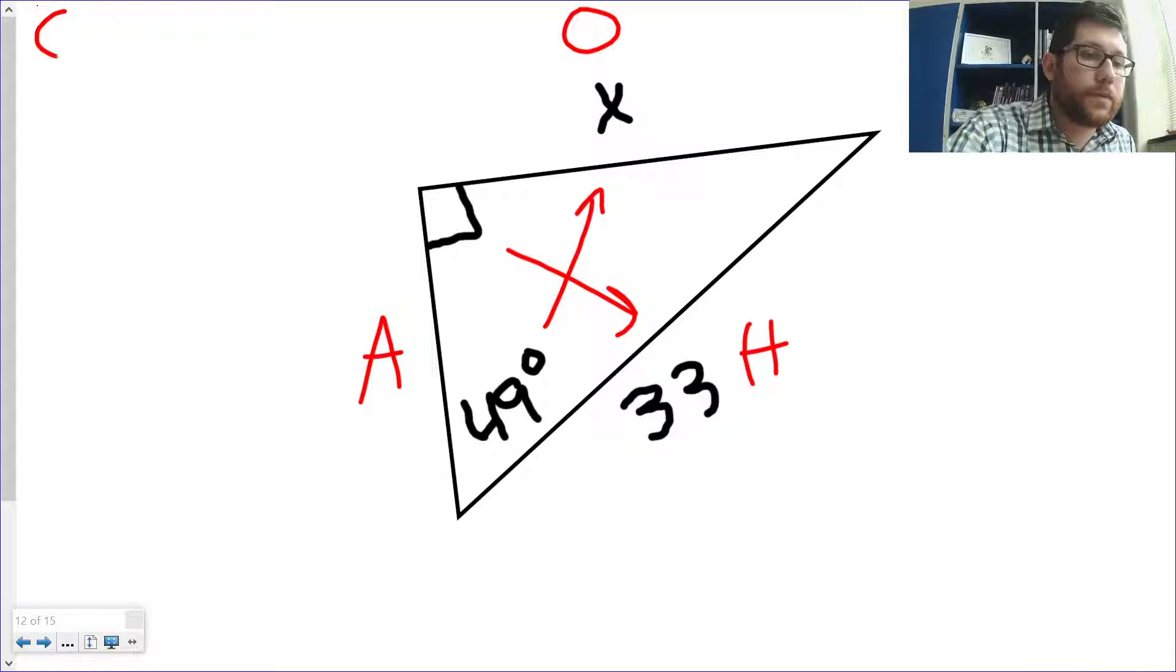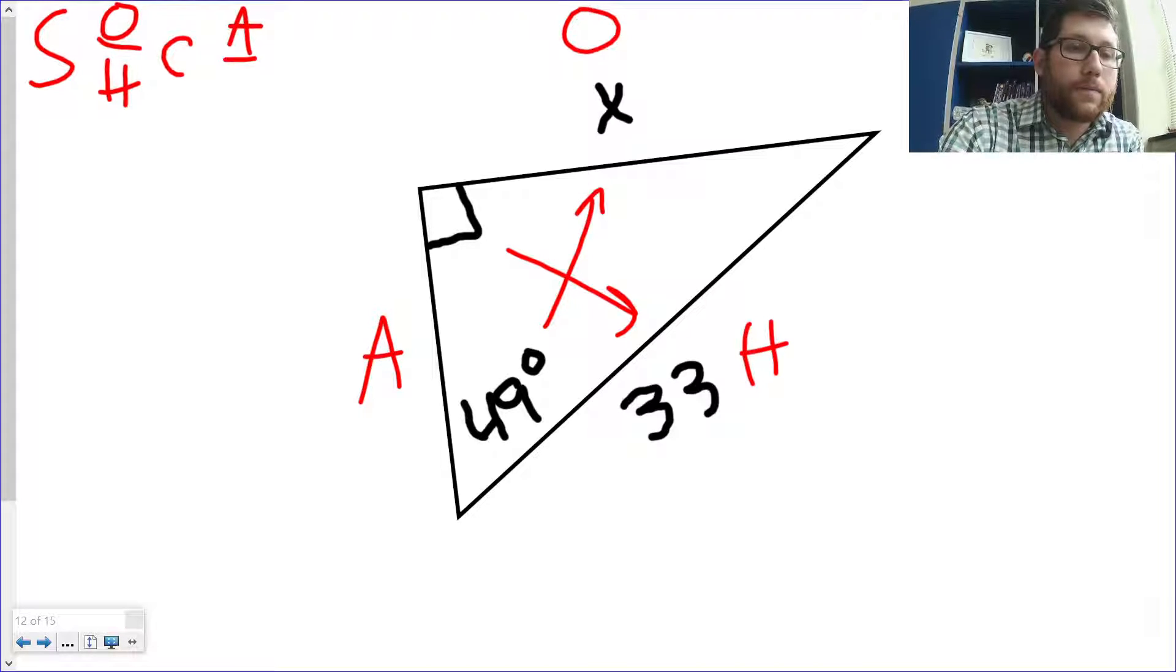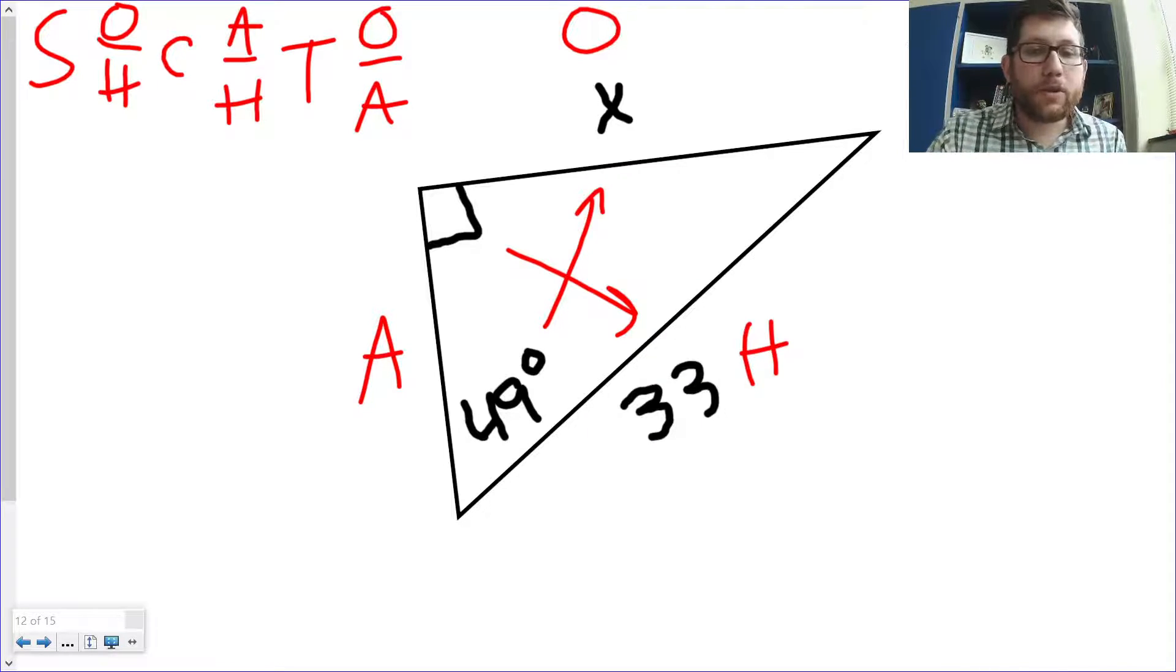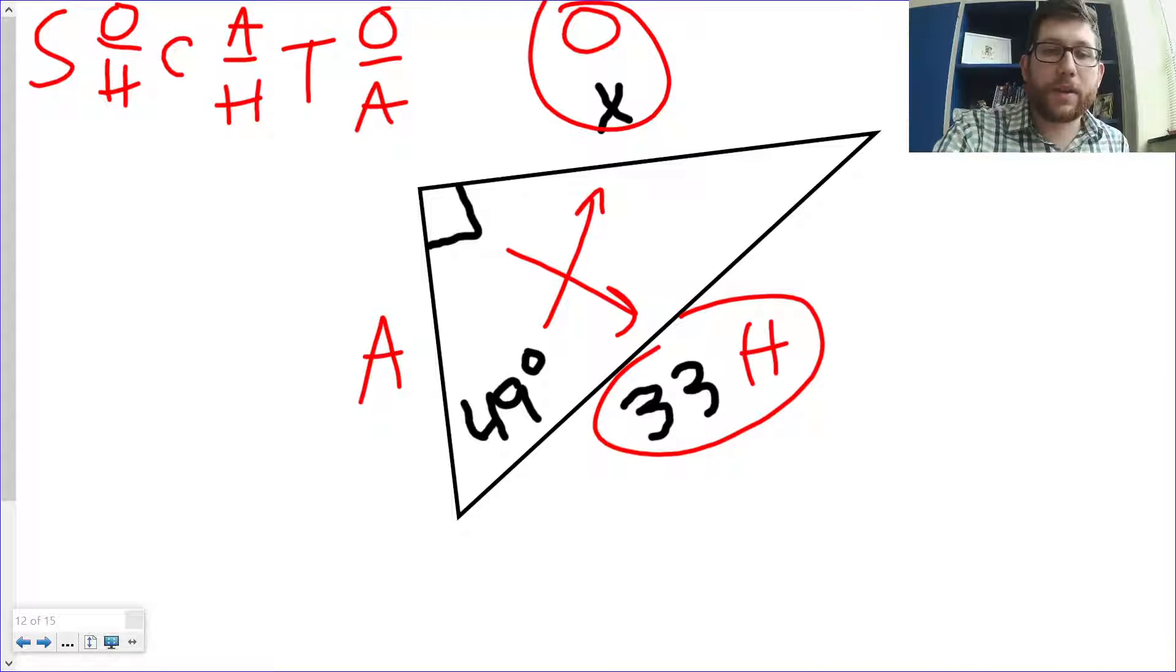So, now, remember SOH CAHTOA. When I'm doing this, look at which letters I have something next to. So, I've got something here with my H, I've got the 33, and I've got something here with my O's, my X. Now, some people get confused, and they like to do the A with the degree sign or something like that. You're not allowed to do that. It has to be outside the triangle. So, what do I have outside the triangle? What sides do I have in play? I've got an O side and an H side in play. That tells me, O and H tells me I'm going to use sine, because that's O over H.